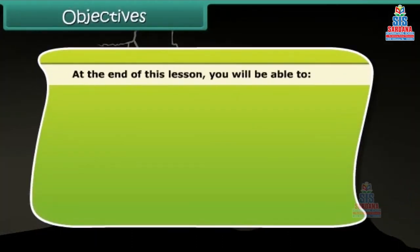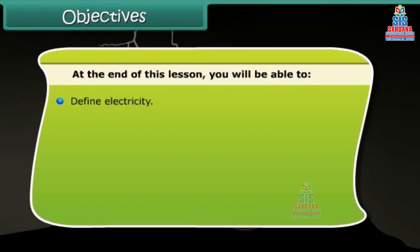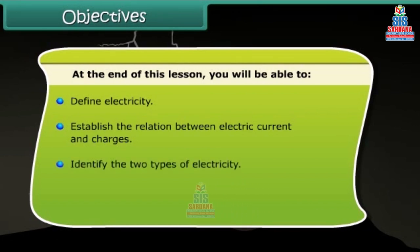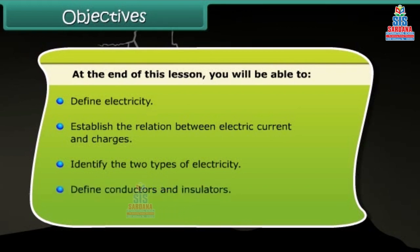At the end of this lesson, you will be able to: define electricity, establish the relation between electric current and charges, identify the two types of electricity, and define conductors and insulators.